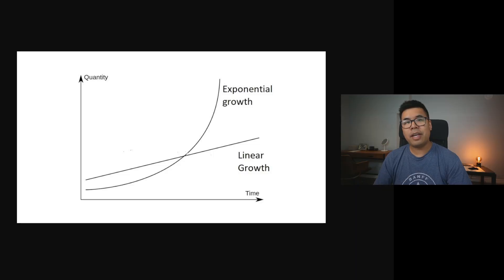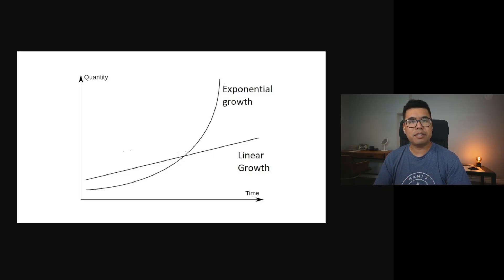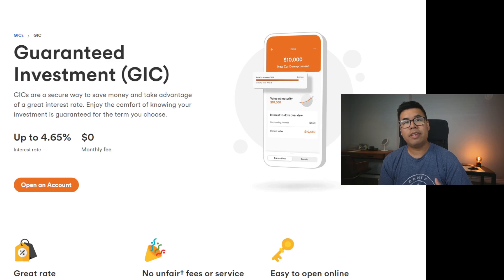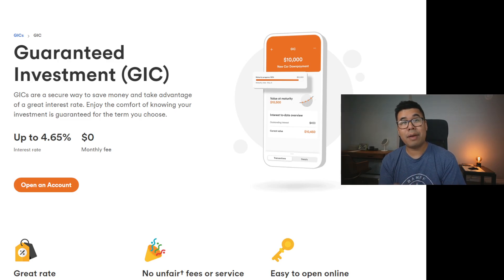Compounding is a financial concept where the value of your investment grows at an increasing rate. So instead of something like a linear growth like this graph, it grows exponentially. One of the simplest investment vehicles to understand compounding interest are GICs.